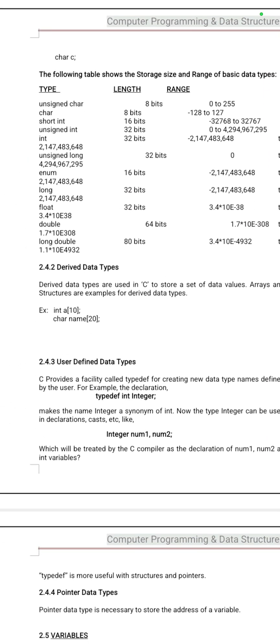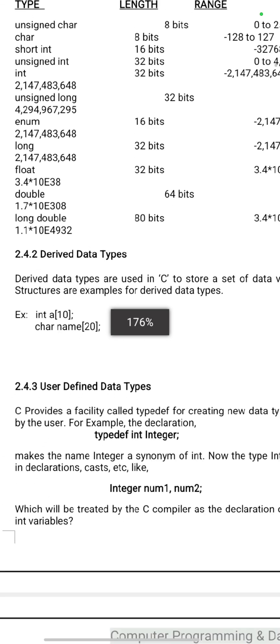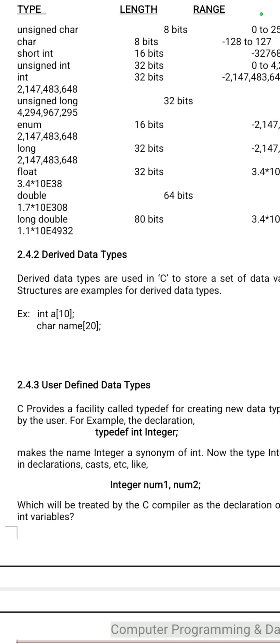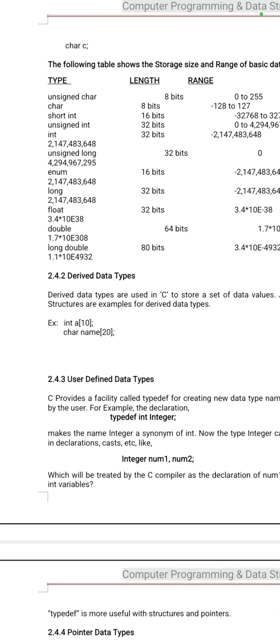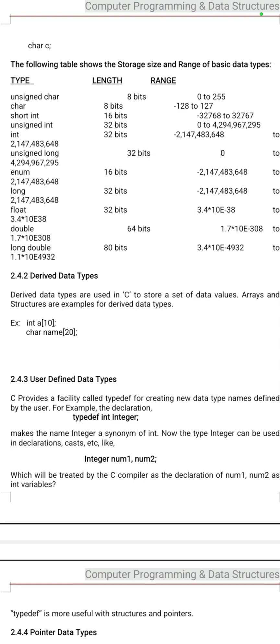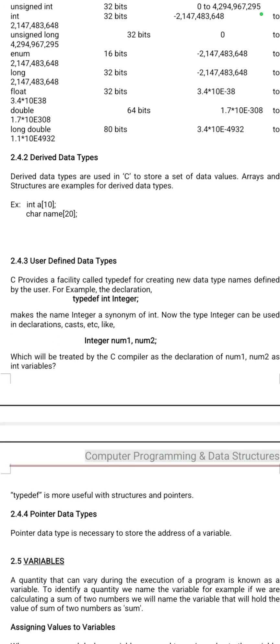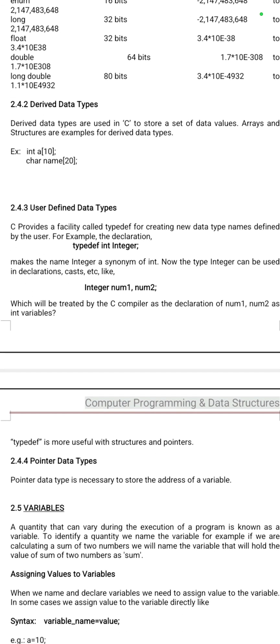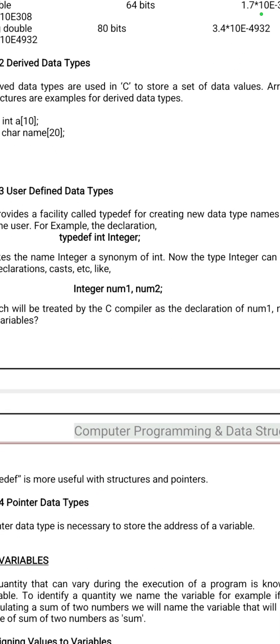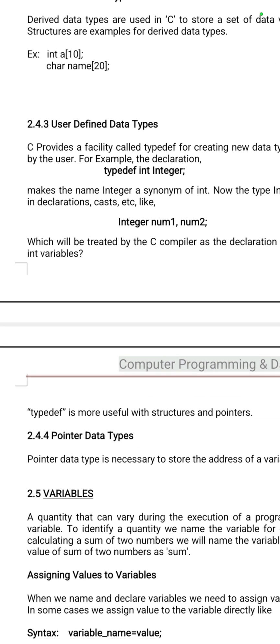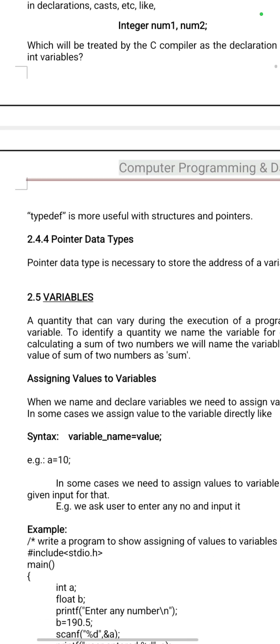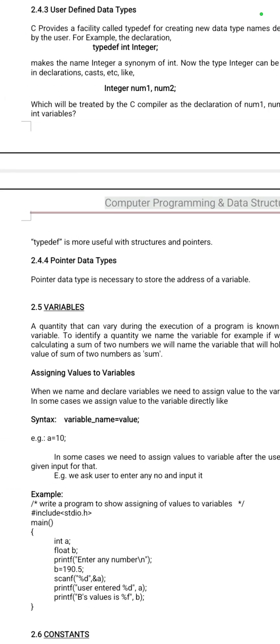Derived data types means any data type derived from another data type. For example, arrays — int a[10]: here int is the basic data type and from that you are deriving array, which is why array is a derived data type. Structure is also a derived data type. User-defined data types include typedef and enum (enumerated). Pointer data type comes under the pointer concept.